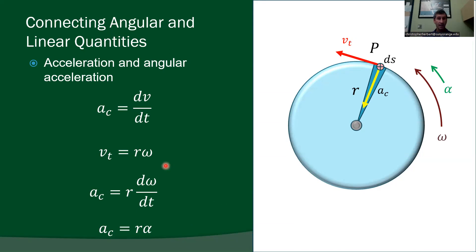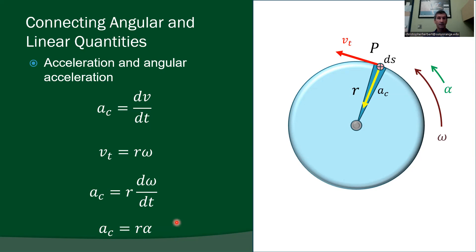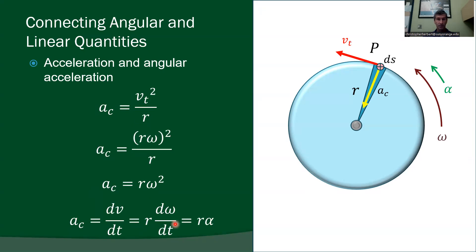Looking at centripetal acceleration again as dv/dt: there's no radial movement here, so we're only dealing with centripetal acceleration. Since vt equals r-omega and r is constant, taking the derivative gives a equals r times alpha. Whether you approach it from the centripetal formula or from differentiating v equals r-omega, you get the same result: a equals r times alpha.